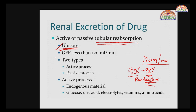Substances reabsorbed by the active process include glucose, uric acid, electrolytes, vitamins, and amino acids — all essential things that must remain in the body. For the passive process, being energy-independent, exogenous materials with high lipophilicity, polarity, or different ionization potential are eliminated by this passive process.